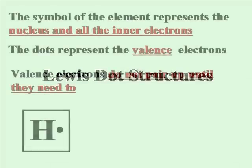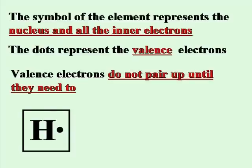Lewis dot structures will allow us to predict the molecular geometry of a molecule. The rules for Lewis dot structures are as follows. The symbol of the element represents the nucleus and all of the inner electrons. The dots that you place represent the valence electrons. Your valence electrons will not pair up until they need to.